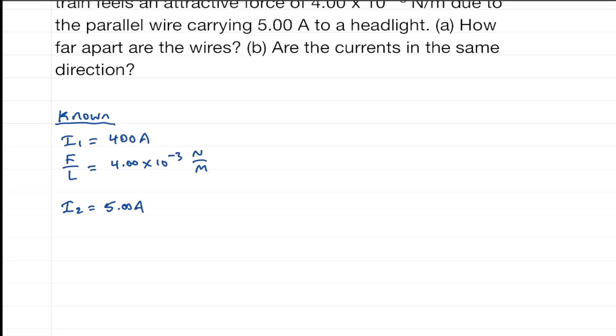And so we need to find the distance between them. We'll call that r. Okay, so for part A, we know the force per length between two parallel wires is mu 0, current 1, current 2, all over 2 pi r, where r is the distance between them.